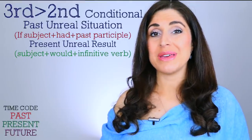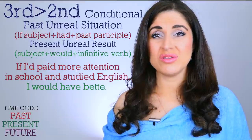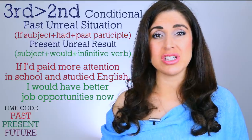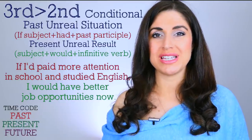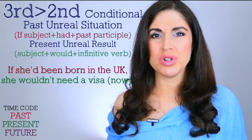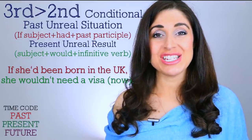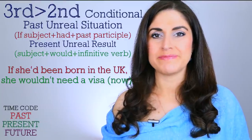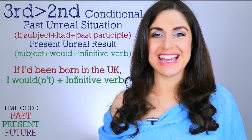Third conditional mixed with second conditional — past unreal mixed with present unreal. For example: 'If I'd paid more attention in school and studied English, I'd have better job opportunities right now.' And: 'If she'd been born in the UK, she wouldn't need a visa.' I want you to complete this sentence in the comments section — imagine how your life might be different if you had been born in the UK.